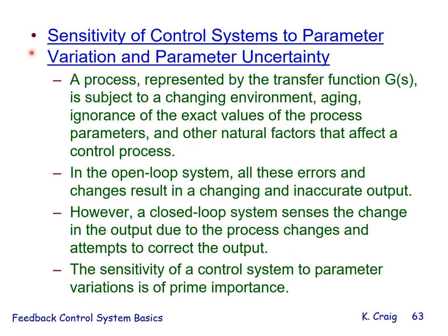Consider the sensitivity of control systems to parameter variation and uncertainty. A process represented by transfer function g is subject to a changing environment, aging, ignorance of exact parameter values, and other natural factors. In the open-loop system, all these errors result in a changing and inaccurate output. However, a closed-loop system senses the change in output due to process changes and attempts to correct the output. The sensitivity of a control system to parameter variations is of prime importance.